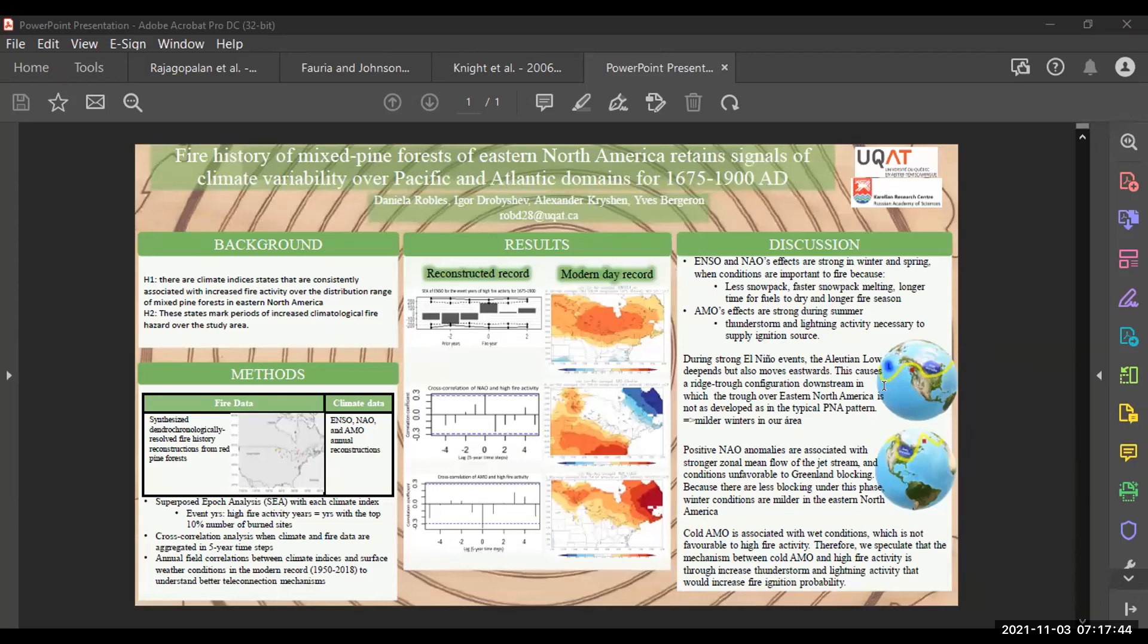Okay, so now, we saw that the positive NAO anomaly is the fire prone state. And maybe in this picture that you can see, hopefully...